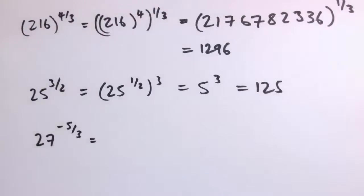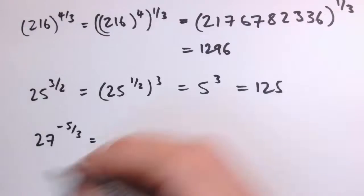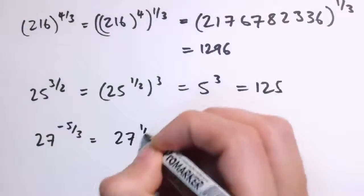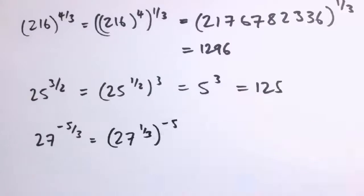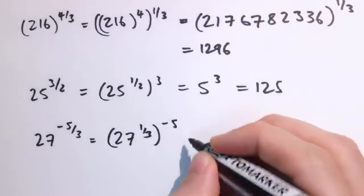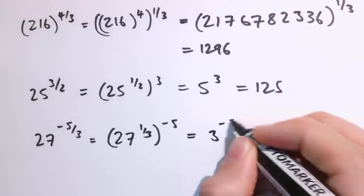Another one we've got here, 27 to the minus 5 thirds. Well I'm going to write it as 27 to the 1 third or to the minus 5, and we'll think about the minus in a second, but 27 to the 1 third is the cube root of 27, so that's 3 to the minus 5.